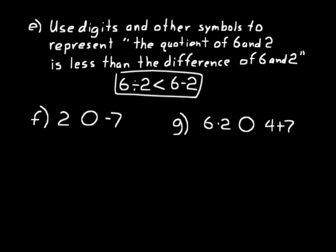In problems F and G, put the appropriate comparison symbol in the box. Pause and figure out whether it's greater than, less than, or equal. On F: 2 is greater than negative 7. Just think about a number line — 0 is the origin, 2 is to the right, negative 7 is to the left, so 2 must be greater than negative 7. On G, work out both sides: the left side is 12, the right side is 11, so 12 is greater than 11 — a greater than symbol goes in that circle.